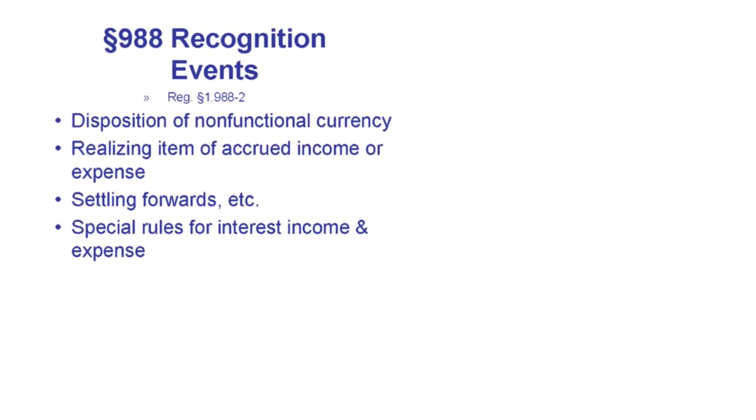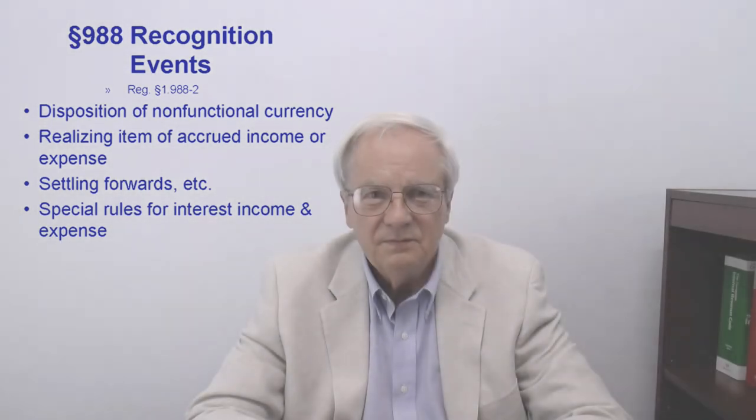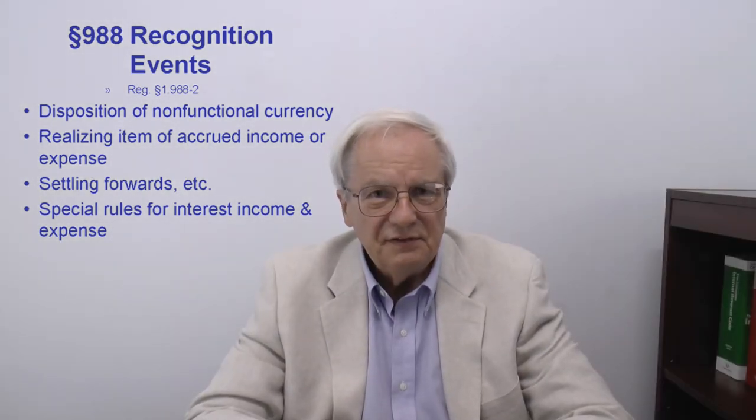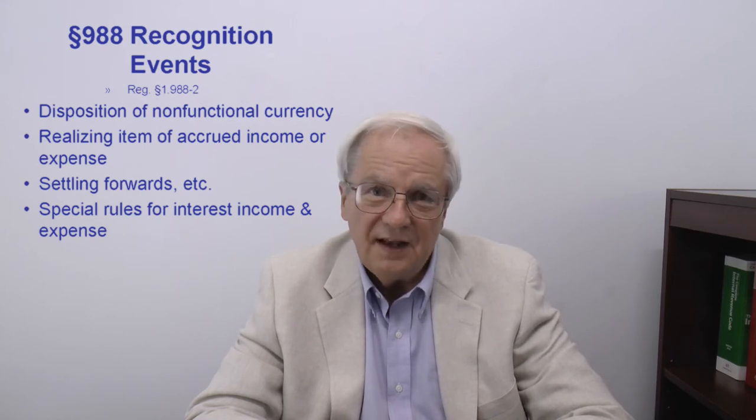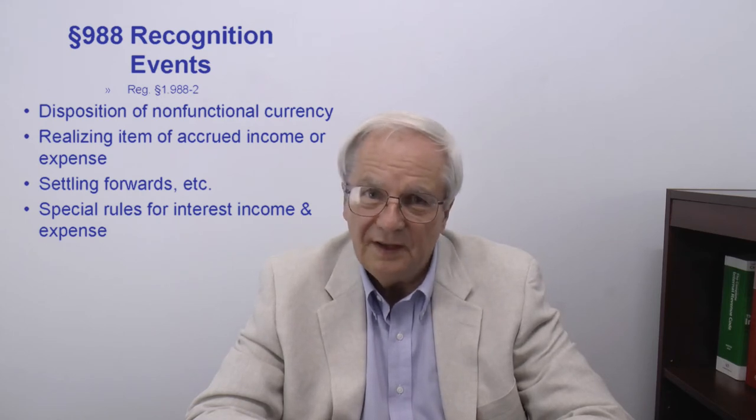When you make payments on that loan, any gain or loss is recognized and is ordinary, and the source — foreign or domestic — is the same as the QBU's income. This can have problematic results for personal items not associated with a QBU, for individuals, like home mortgages. The Section 988 regulations define what events trigger recognition. These include disposition of non-functional currency, realizing an item of accrued income or expense, and settling a forward or futures contract.